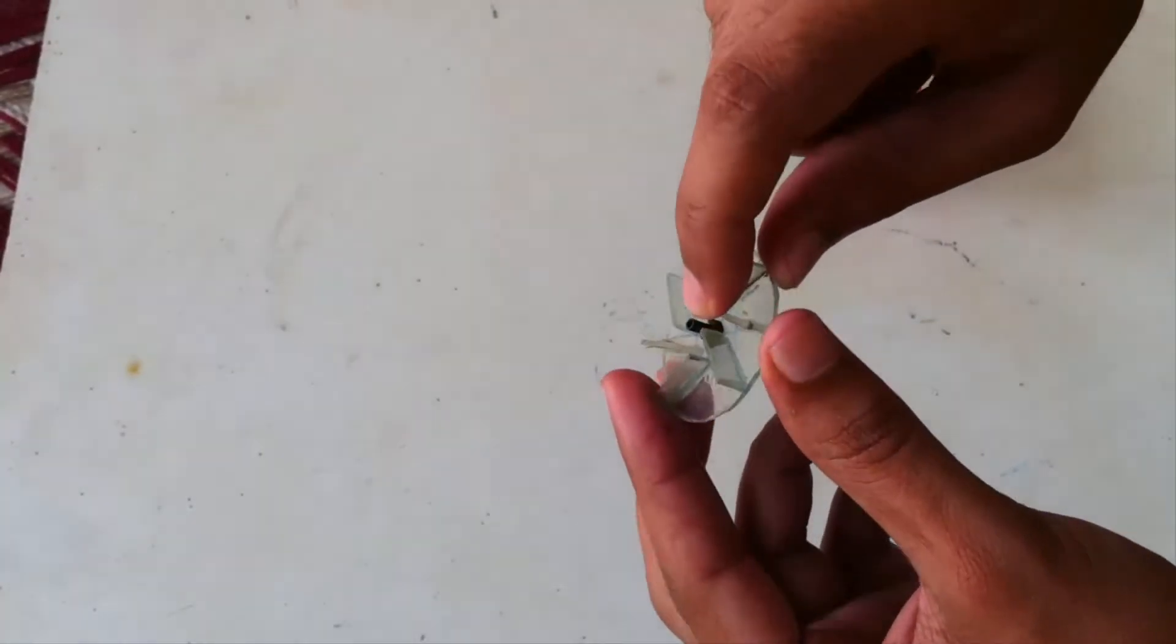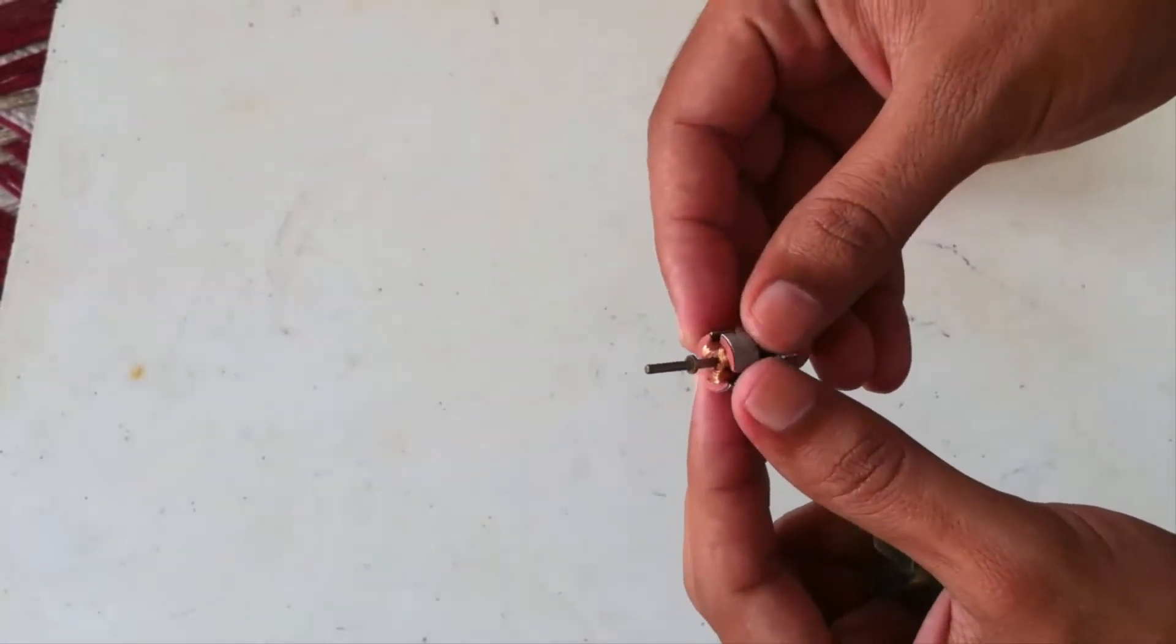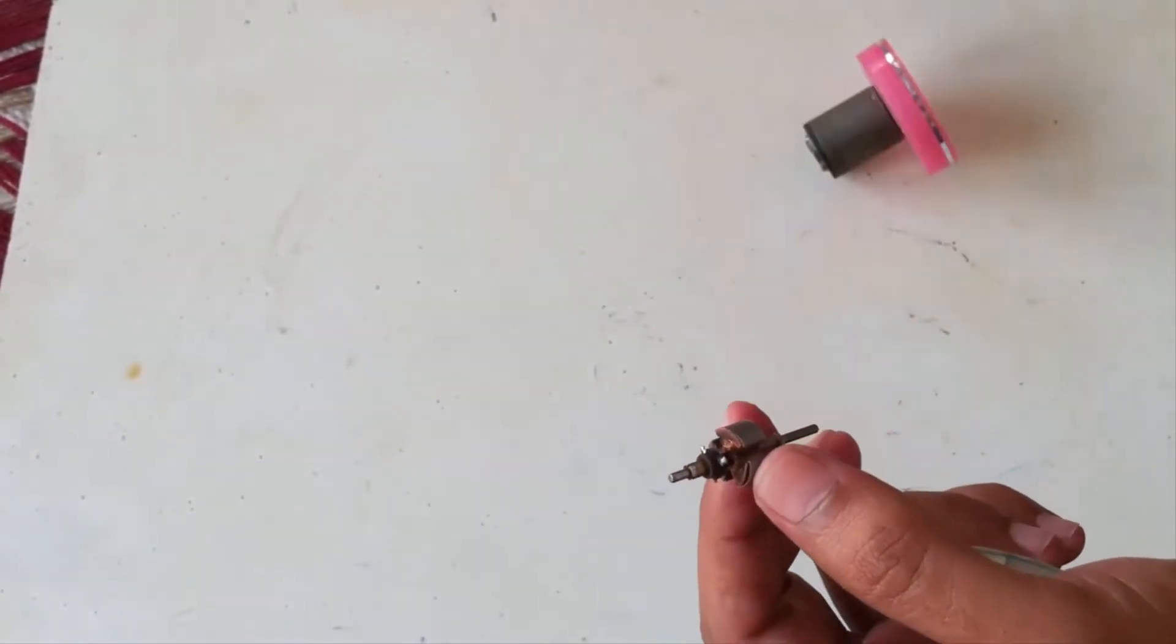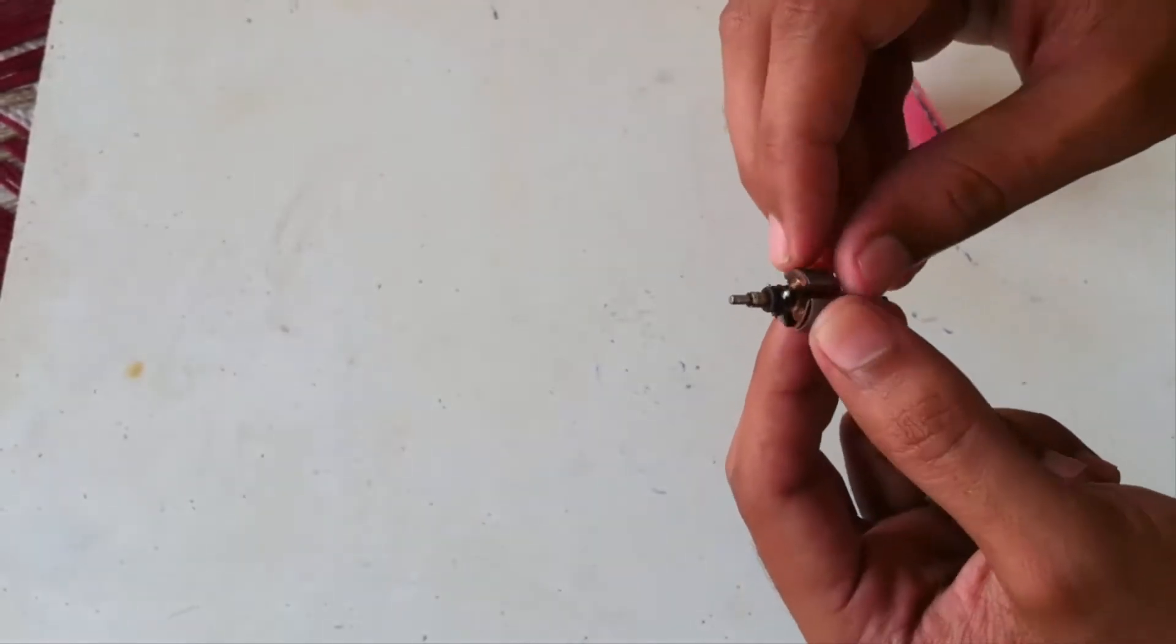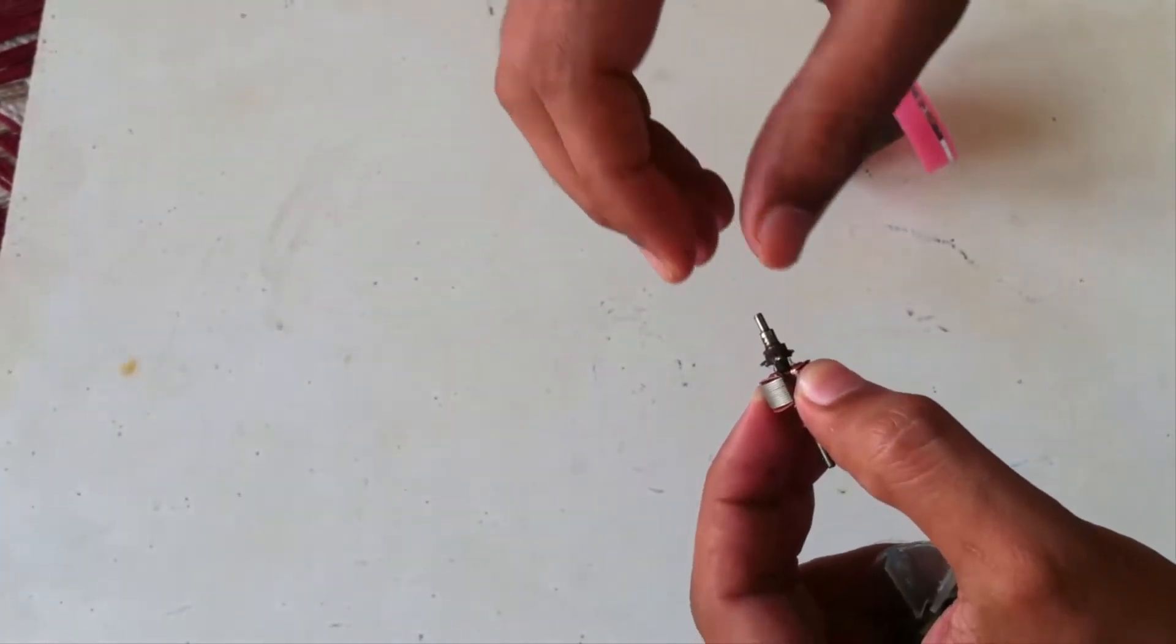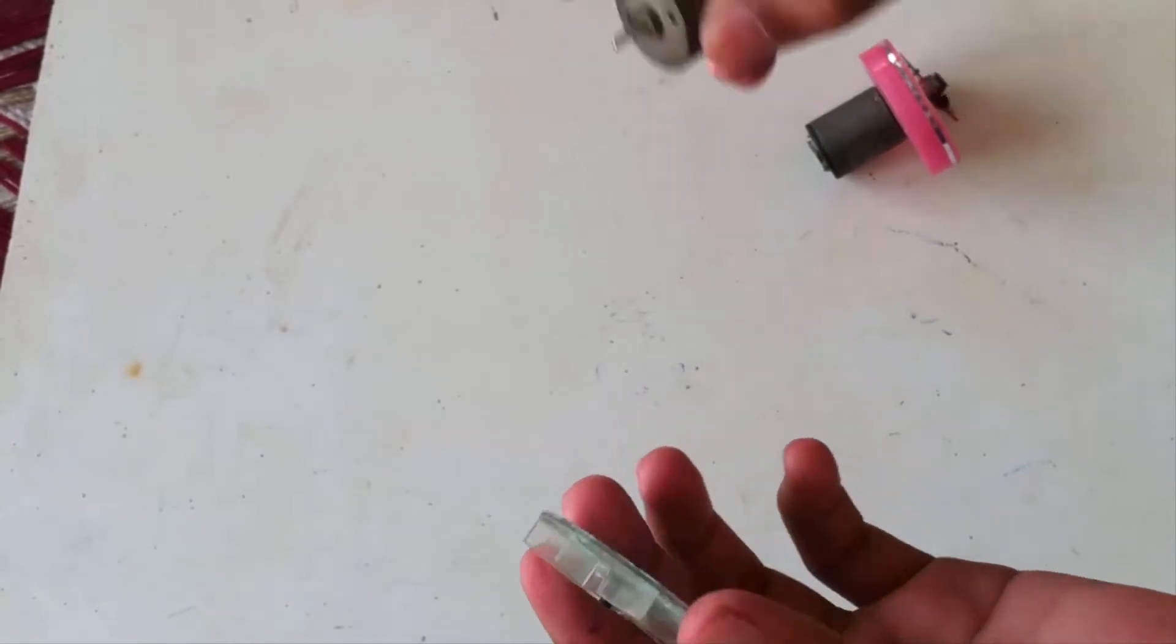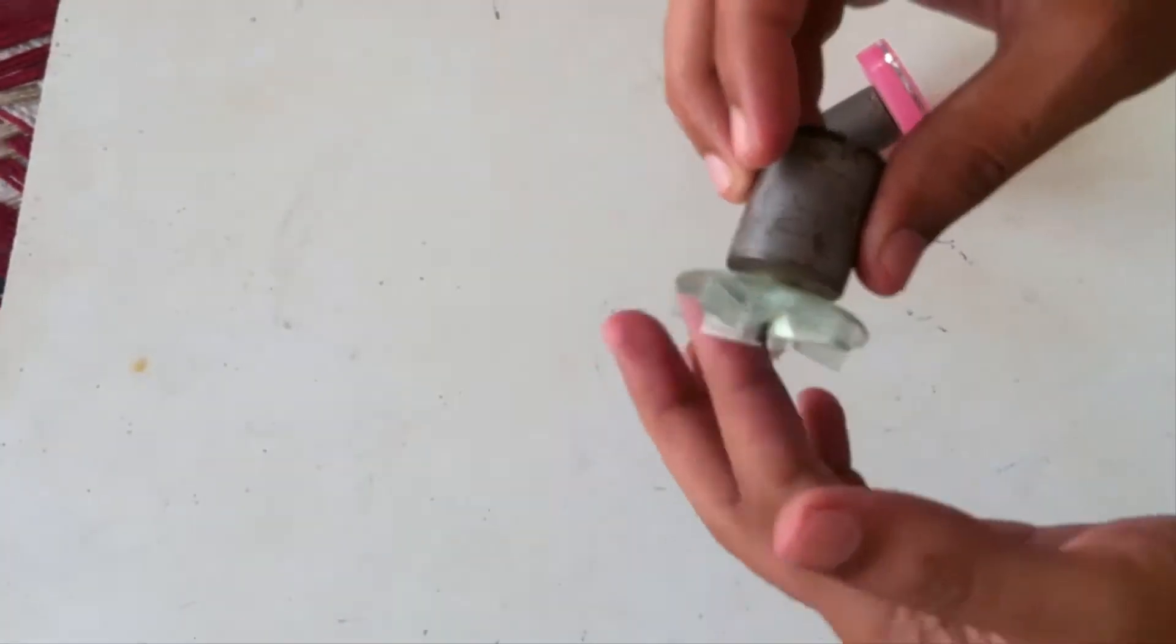The part we have on this fan that holds tightly the axle of the motor we can get from the rotor of a DC motor. This motor is easily found in toys. Just pull it off and we can use this in our water pump fan to tightly hold the axle of our motor.